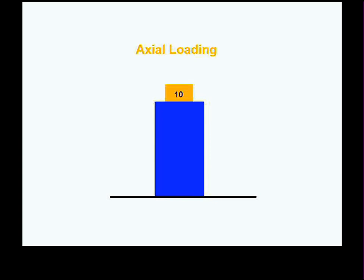Let's take a look at forces of compression in general. This is a column of some indeterminate uniform material sitting on a surface, and I apply a 10-unit weight to it. Since I've put it directly over the middle of the column, this is referred to as axial loading — right down the axis of the column. If we want to find out how this column is loaded, we can measure the stress — that is, the force per unit area — at some location in the column.